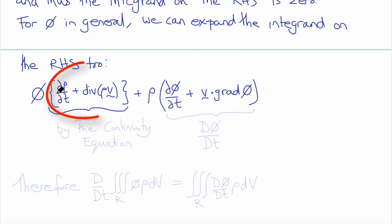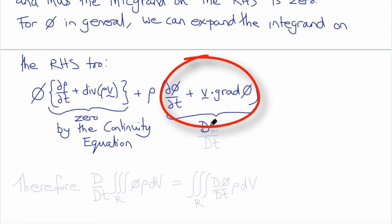Now observe that this term is actually 0 because this is the continuity equation. And this term here is the material derivative of phi by definition of the material derivative. Therefore...